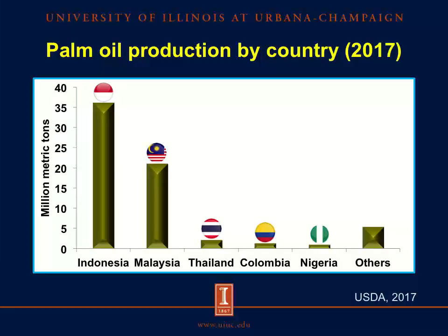This graph shows the palm oil production by country in 2017, and the y-axis represents the oil production in million metric tons. More than 50% of the palm oil in the world is produced by Indonesia, and more than 80% is produced by Indonesia and Malaysia. In third, fourth, and fifth place are Thailand, Colombia, and Nigeria, which represent around 7% of worldwide production.